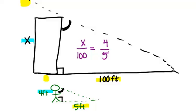Now let's check out how we did this. X has to match up with 4 because those are both the heights. 4 was the height of the person and X was the height of the building and then 100 matches up with 5 because those are both the base shadow lengths.